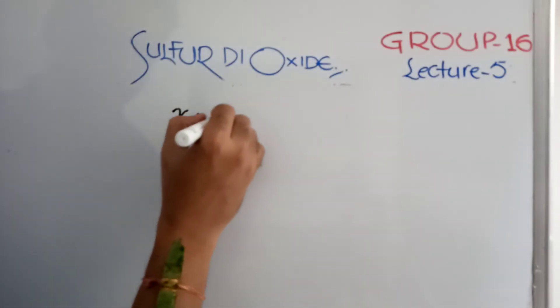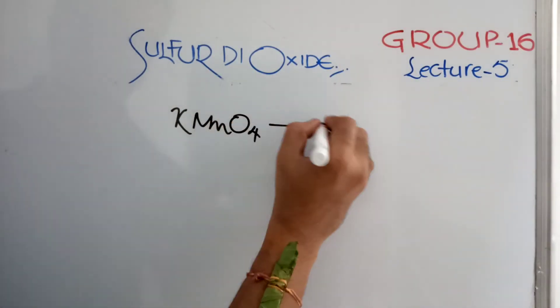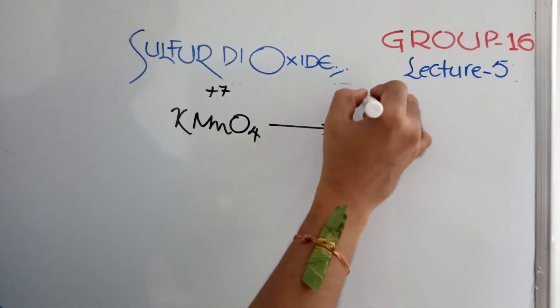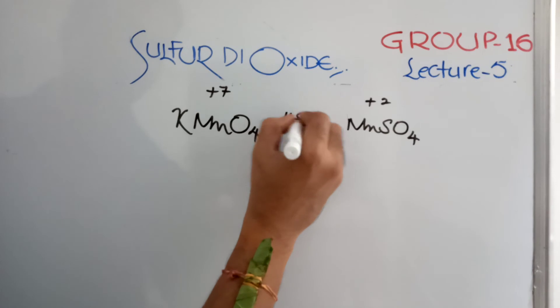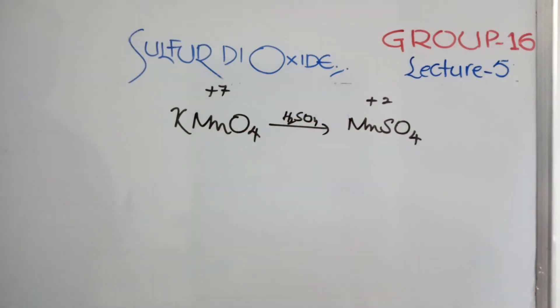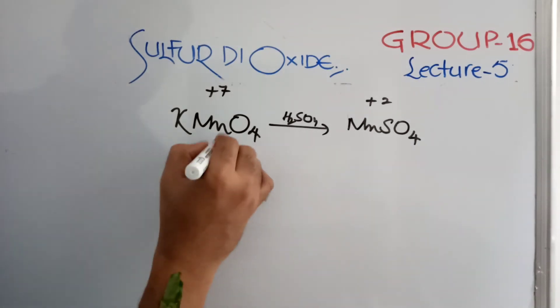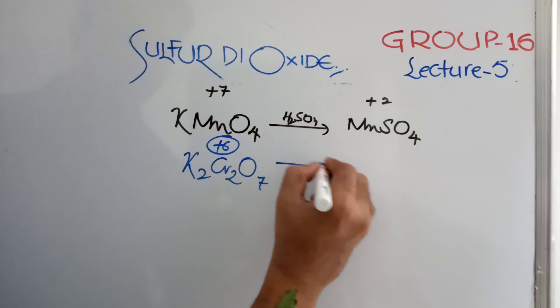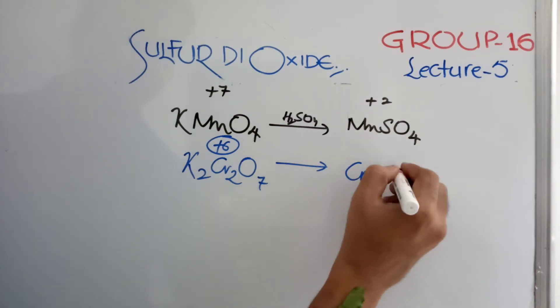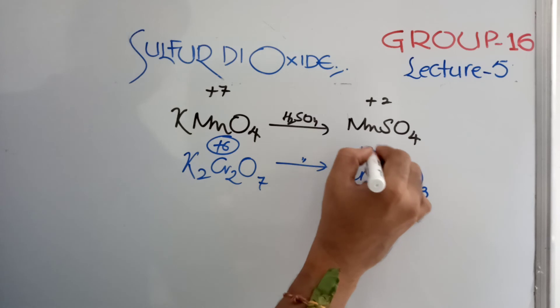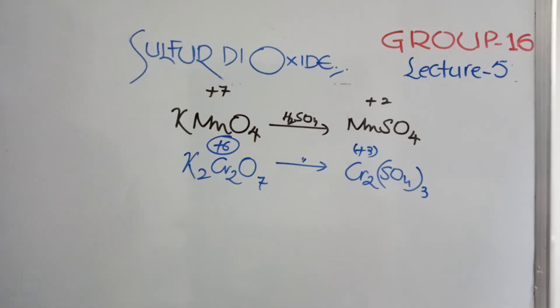Some reactions you see. KMnO4, where manganese oxidation state is plus 7, is converted to MnSO4 in presence of acid medium. K2Cr2O7, orange color, where chromium is in plus 6 oxidation state, is converted to chromic sulfate. Again, in sulfuric acid medium only. So, oxidation state is here plus 3. Green color, chromic sulfate is formed.